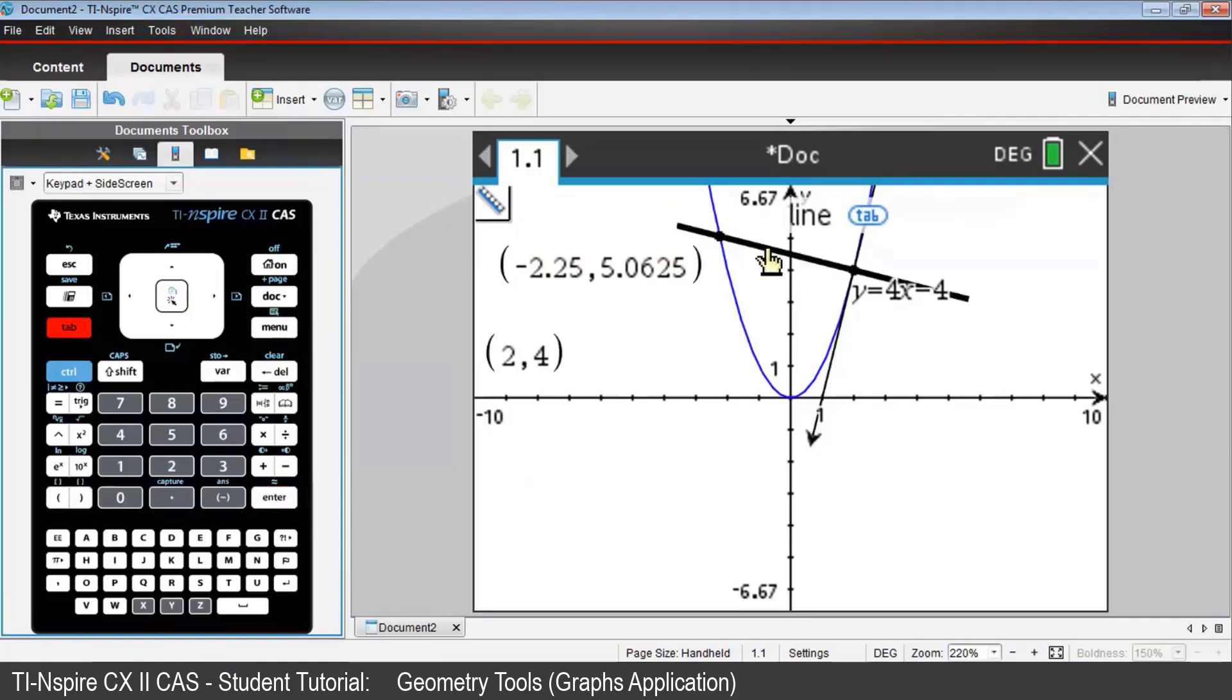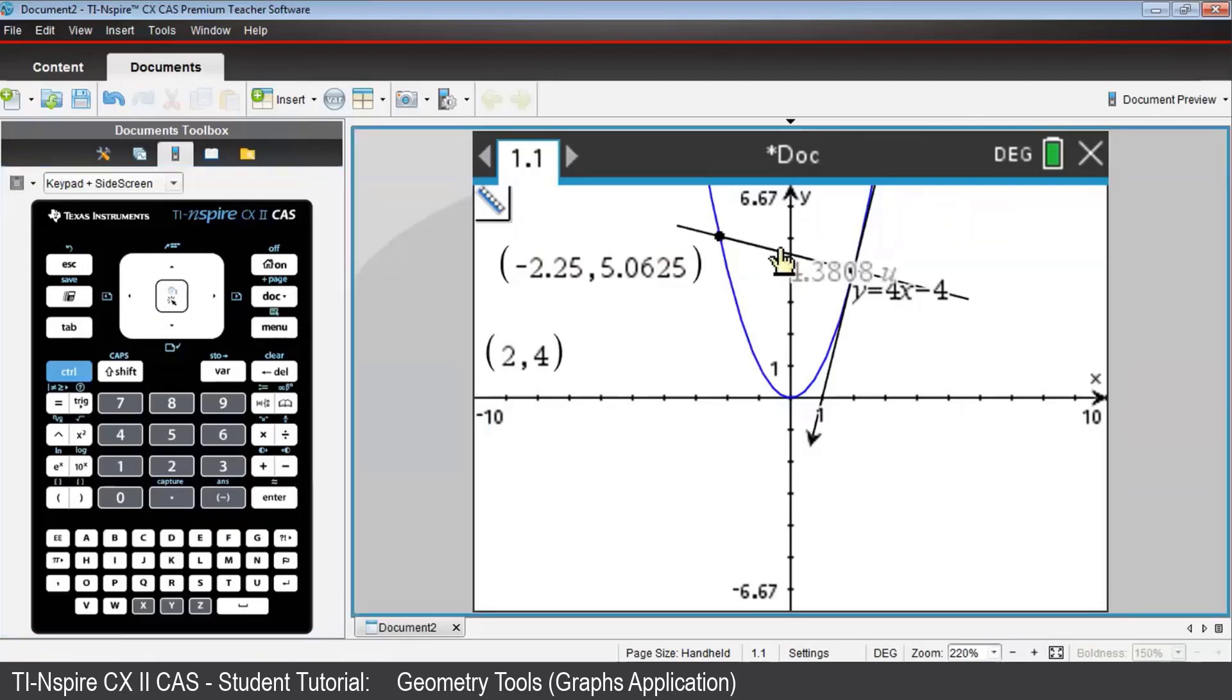And the segment will be highlighted, and the measurement will be ghosted, awaiting your decision, sort of like asking you, are you sure? Double-click, and the measurement, which is approximately 4.4 units, will now be fully visible. Press Escape to remove yourself from the measurement sub-menu. Move that measurement to a convenient location on the screen.